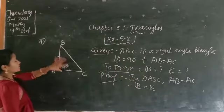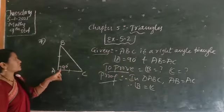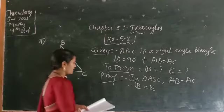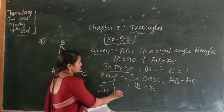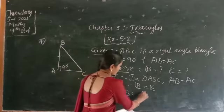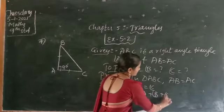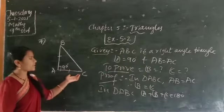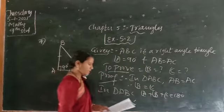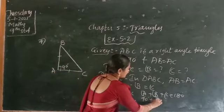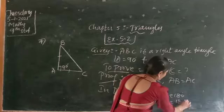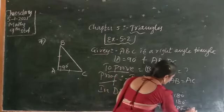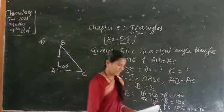Why? Because AB is equal to AC means the angles opposite to equal sides are equal, so angle B equals angle C. In triangle ABC, you know already angle A plus angle B plus angle C is equal to 180 degrees, because the sum of all angles of a triangle is 180 degrees. Substituting angle A as 90 degrees, angle B plus angle C equals 180 minus 90 degrees.